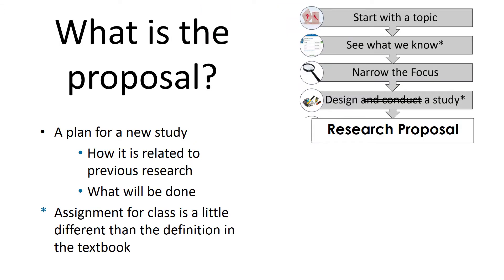What is a research proposal? It's a plan for a new study, including how it relates to the previous research and how the study will be carried out. The proposal assignment will include an introduction section with literature review, and a methods section with participants, materials, and procedure. The explanation of the textbook mentions anticipated results, but the assignment for class won't include that part.